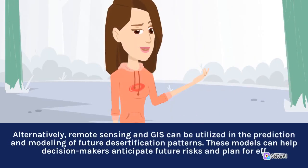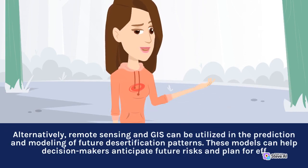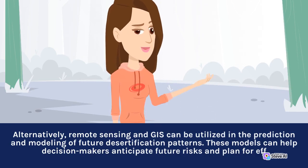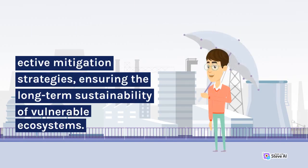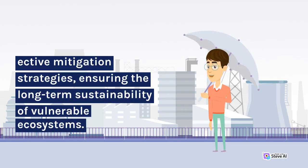Alternatively, remote sensing and GIS can be utilized in the prediction and modeling of future desertification patterns. These models can help decision-makers anticipate future risks and plan for proactive mitigation strategies, ensuring the long-term sustainability of vulnerable ecosystems.